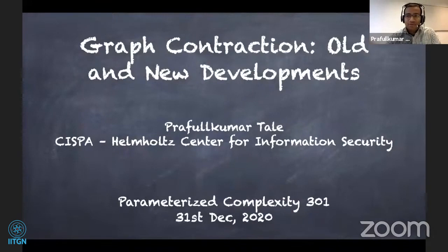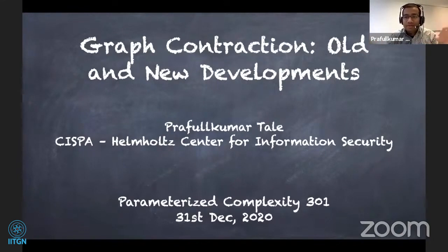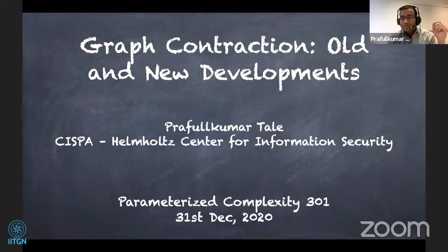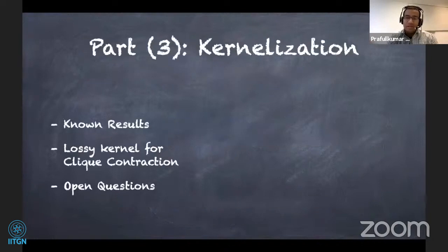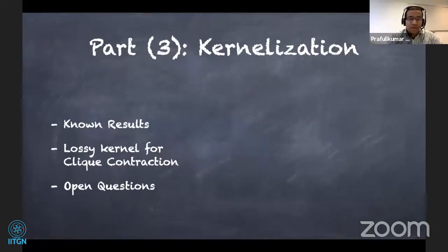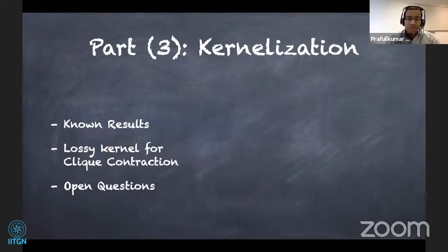Thank you everyone. Let's resume. I hope the first two parts were able to convey the message that edge contraction problems are harder than other modification problems. With that in mind, let's continue with our third part, which is kernelization. In this part we'll see the known results about edge contraction problems regarding kernels, and the second part will be a lossy kernel for clique contraction.